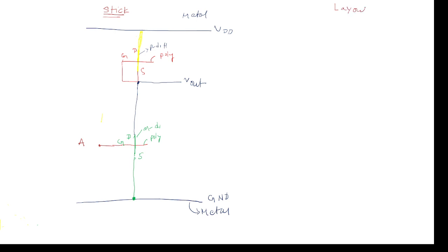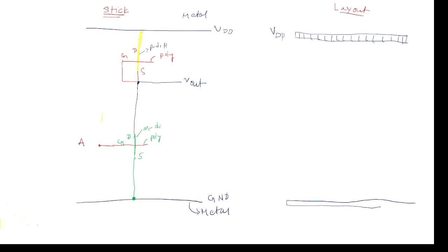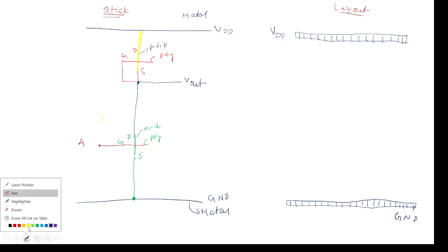Mask layout is the same. First, we need to draw the supply — this is used for metal. The metal symbol for mask layout: a box contains straight lines is the metal symbol. This is VDD. Ground is also required — also using metal, we are drawing. This is the symbol for metal. The implant color is yellow, and implant indicates the depletion mode transistor.